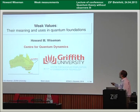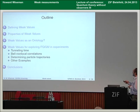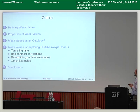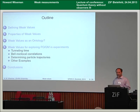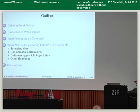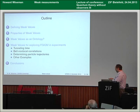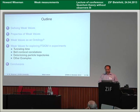I'm at Griffith University here in Brisbane, Australia, in the Centre for Quantum Dynamics. So this is the outline: I'm going to begin by defining weak values, talking about their properties, then their possible role as an ontology — though I should say in general I'll be talking about other people's work mainly here, not my own. For completeness I'm going to include things I don't feel completely comfortable talking about, and then where I am more comfortable: the uses of weak values for exploring fundamental questions in quantum mechanics, various examples, and then conclusions.